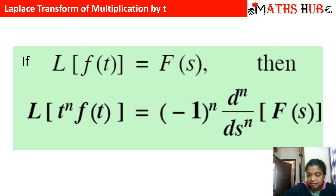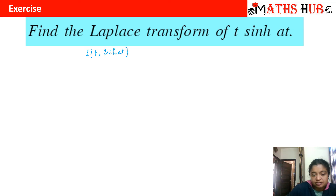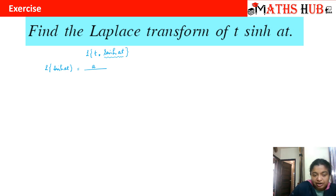Let us apply this to the next question: find the Laplace transform of t·sinh(at). We start with Laplace{sinh(at)}. Recall Laplace{sin(at)} = a/(s² + a²); for the hyperbolic version, the sign changes, giving Laplace{sinh(at)} = a/(s² − a²). Now we are multiplying this function by t.